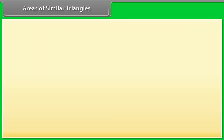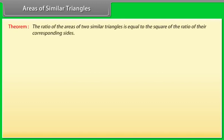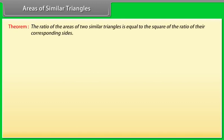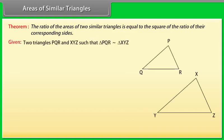Areas of Similar Triangles Theorem: the ratio of the areas of two similar triangles is equal to the square of the ratio of their corresponding sides. Let us prove this theorem. Two triangles PQR and XYZ are given such that triangle PQR is similar to triangle XYZ.